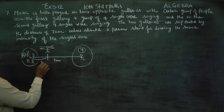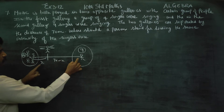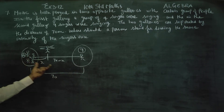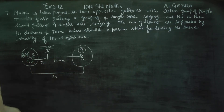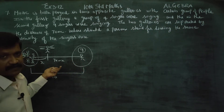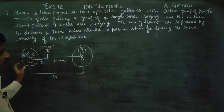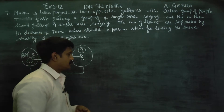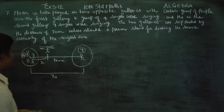Let the distance from the first gallery be x. Then the distance from the second gallery is 70 minus x, so the total is 70. Sound intensity has an inverse relationship with the square of distance — that is the key relation.